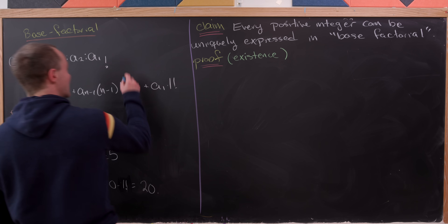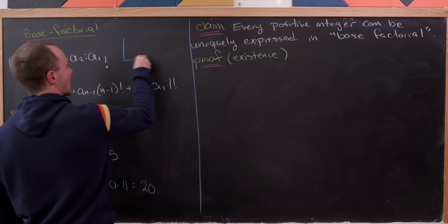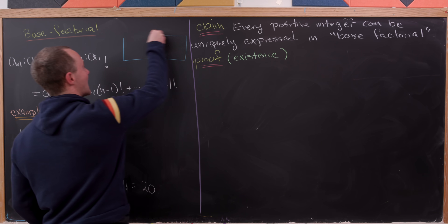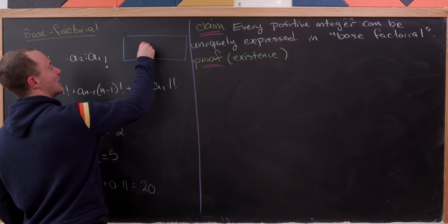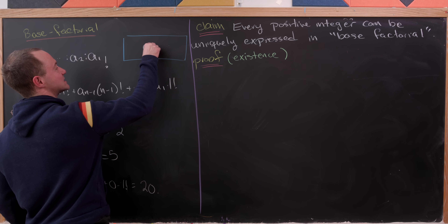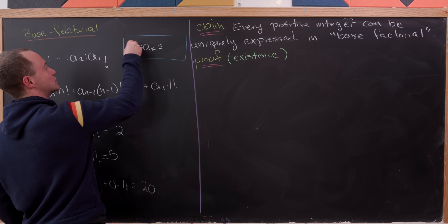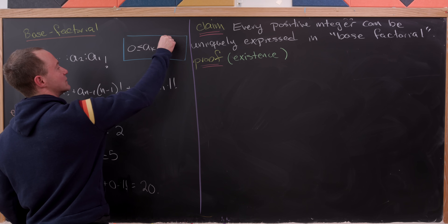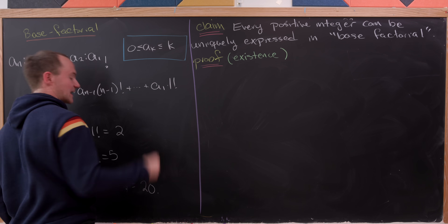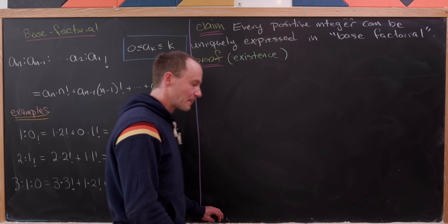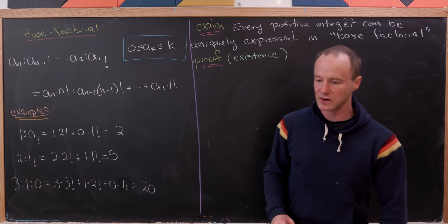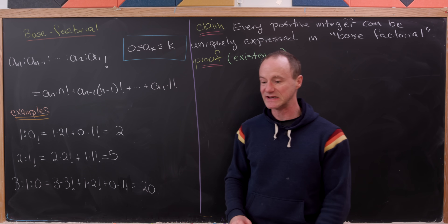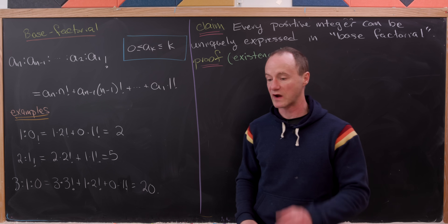There's an important caveat here: a_k is always between 0 and k. So each place value here can take a different range.